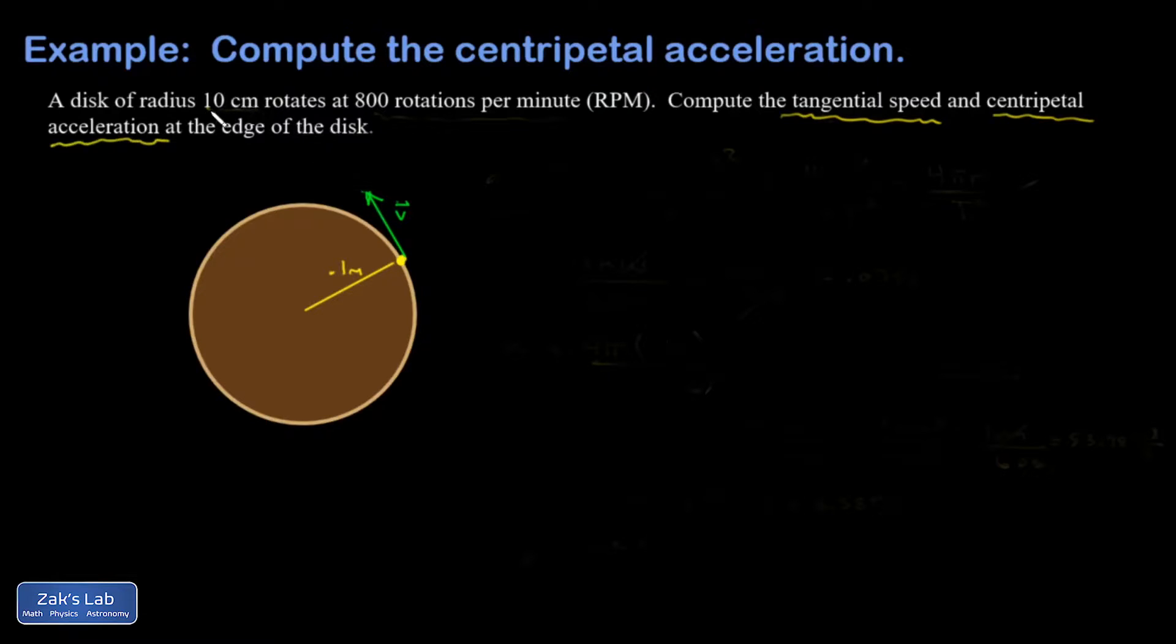The radius of this is 10 centimeters, which I already put in the diagram as 0.1 meters, and then I showed the tangential velocity vector there.